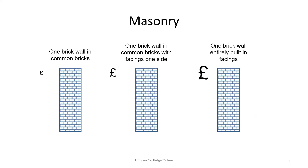This page illustrates some of the finishes and facings to a one brick wall referred to previously on slide 3, but this is by no means exhaustive. On the left is the cheapest form of construction: a one brick wall in common bricks or flettons. In the centre is a one brick wall in common bricks with facings on one side. And finally, the most expensive of all, a one brick wall built entirely from facing bricks. The construction of the wall must be included in the description of the works.